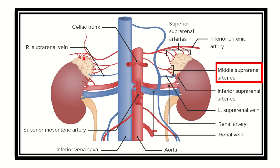First, let's look at the adrenal gland. Here we can see the right suprarenal gland and here is the left suprarenal gland. We can see the suprarenal gland receives blood supply from multiple vessels, which we need to identify.